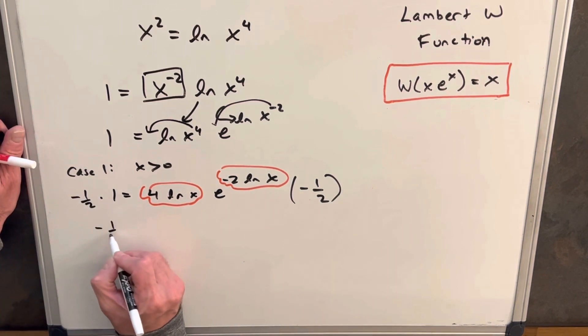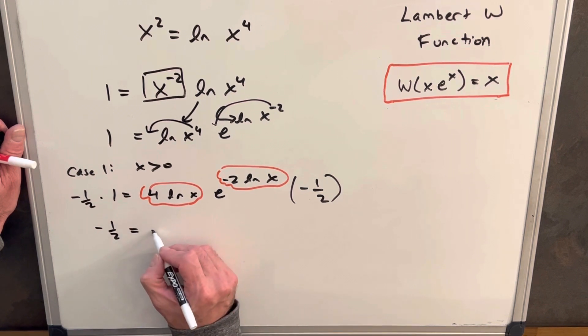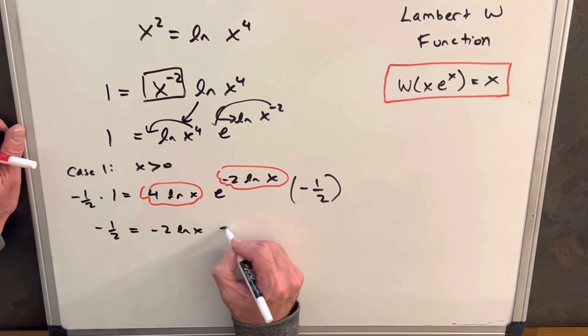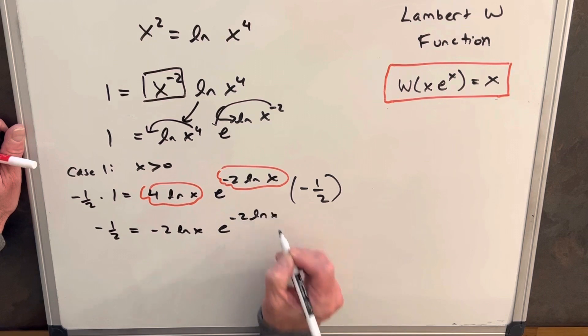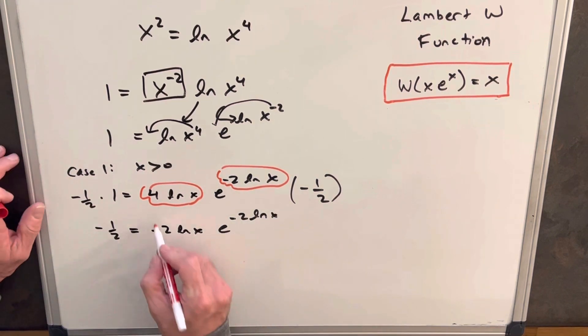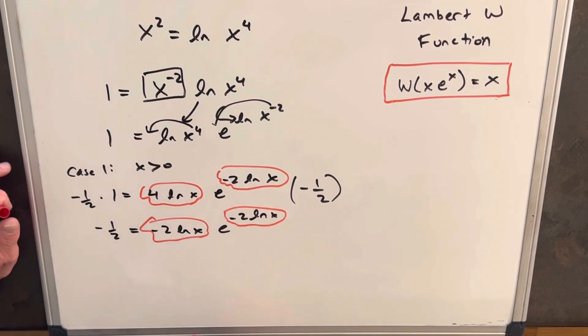So then we're going to have minus 1/2 equals minus 2 ln x, e to the minus 2 ln x. And that's going to be perfect, because these two are exactly the same.